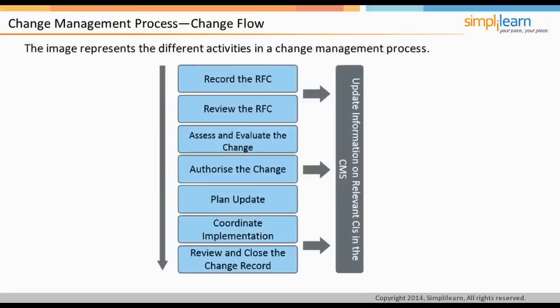The change management process starts with a request for change (RFC), which is logged in the change management system. Information is captured and tracked through to completion. An initial review is performed to filter RFCs that are incomplete or incorrectly routed. The RFCs are then assessed, which may require involvement of the Change Advisory Board or Emergency Change Advisory Board for business justification, impact, cost, benefit, and risk assessment. This is authorized by the change manager. The change requester will then ensure they have approval across three main areas.